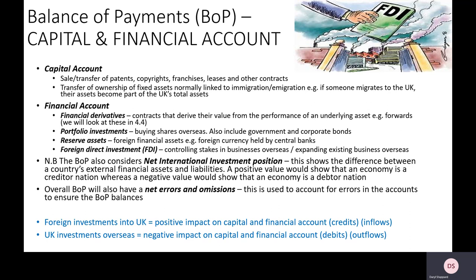Outflows of money would be British economic agents doing the same thing overseas — investing in factories in America, buying shares in German companies, or investing in government bonds in China. If inflows exceed outflows you are running a capital and financial account surplus; if outflows exceed inflows you are running a deficit. Importantly, if you've got a current account deficit, you've got to find that money from somewhere — it's found by having a capital and financial account surplus, which plugs the gap to ensure the balance of payments balances.